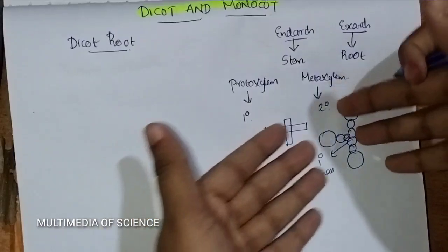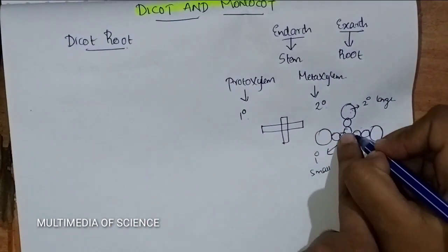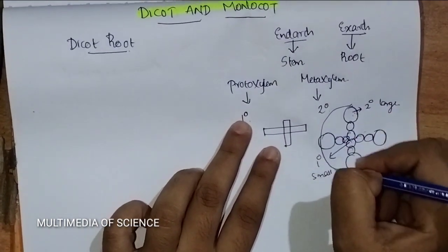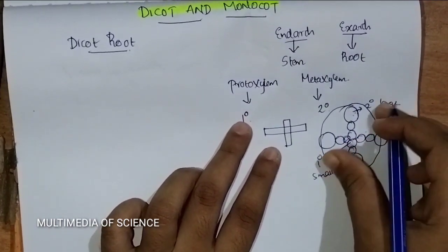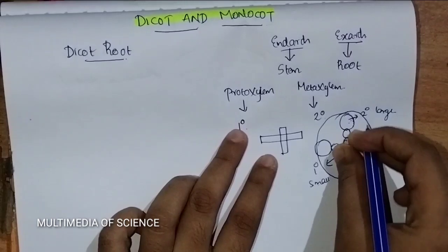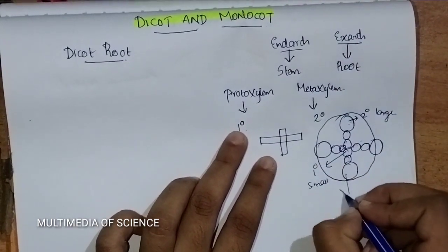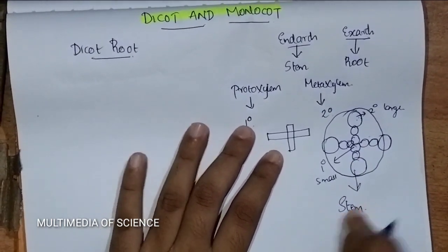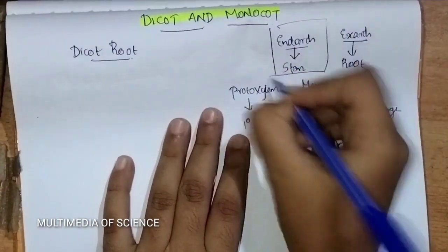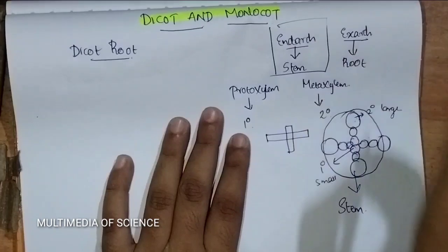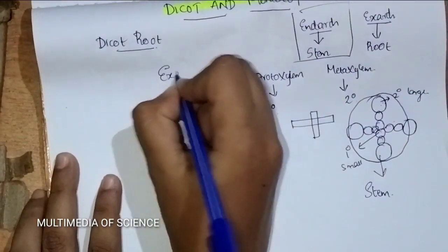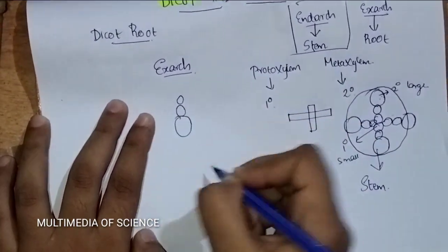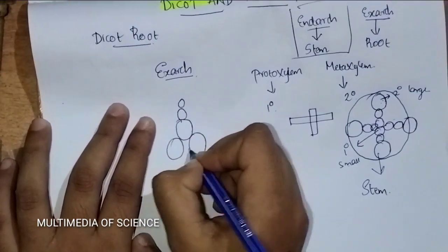In stem, Protoxylem is towards the center and Metaxylem is towards the periphery. Just consider it as a circle — Protoxylem towards the center and Metaxylem towards the periphery. That structure is for stem and it is called Endarch. Stem is Endarch, and just opposite to this is Exarch. In Exarch, Protoxylem is towards the periphery and Metaxylem is towards the center.